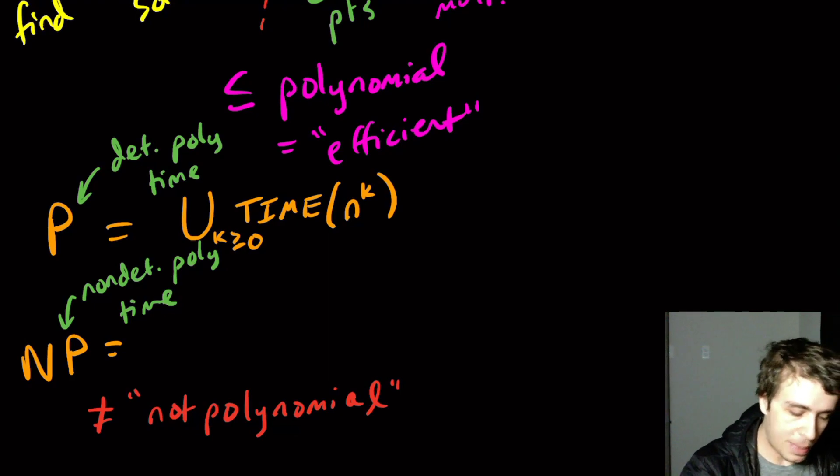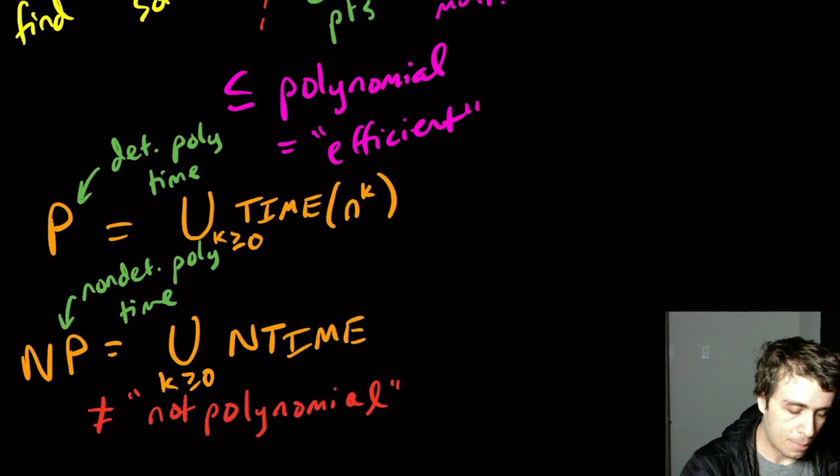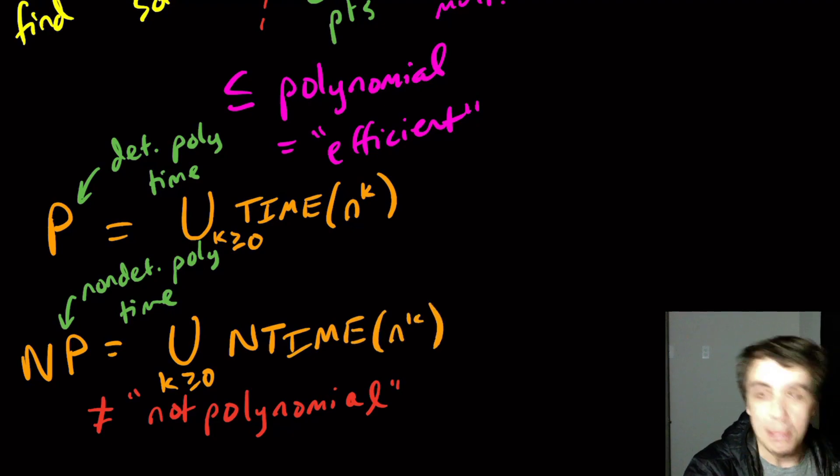NP is very similar. We have the union over k at least zero of non-deterministic time n to the k. So it's exactly the same except now you have non-determinism instead of just determinism.